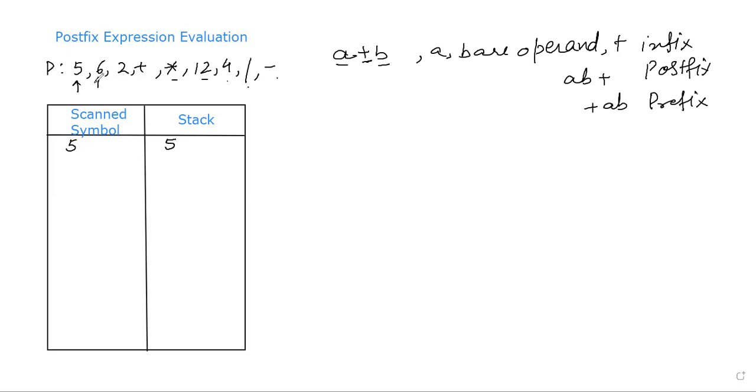The second symbol that we have is 6. It is again the operand, so we will push it in the stack. I'll write it as 5, 6. Then the next one we have is 2. 2 is again the operand, so that will also be inserted in the stack. Right now we have got 3 elements, 3 operands in the stack.